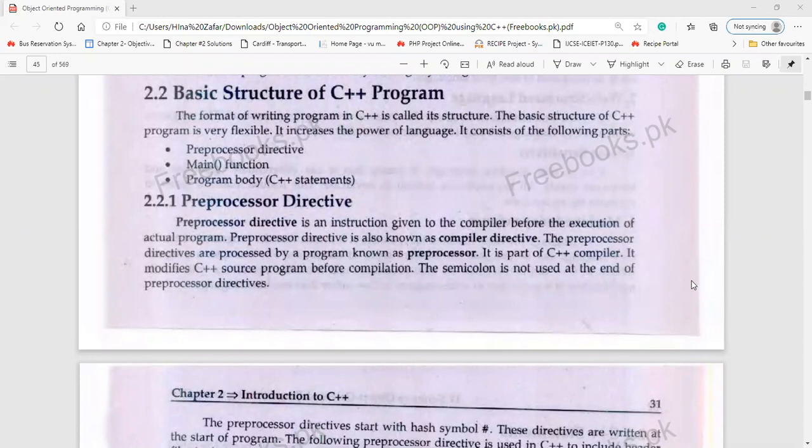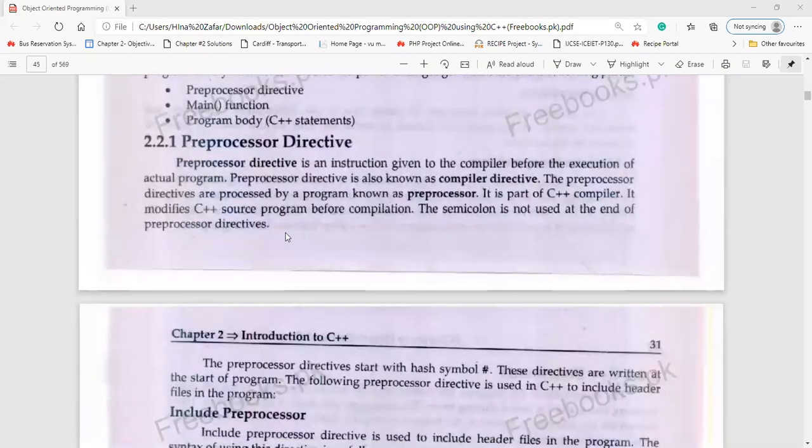The Pre-Processor Directive is a set of instructions that can be given to the compiler so that it can compile your written statements according to a correct format. The Pre-Processor Directives are called compiler directives because they help out the compiler. They are processed by a program known as a Pre-Processor, which is part of the C++ compiler. It modifies C++ source program before compilation.